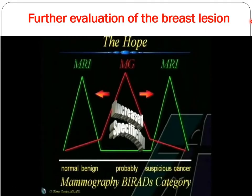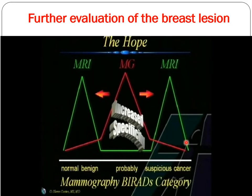Why do we perform breast MRI simultaneously with mammogram? As shown here, when mammogram identifies a suspicious lesion, MRI can further stratify the result — normal, benign, suspicious, or requiring biopsy. This demonstrates the importance of performing MRI for breast lesions already identified by another modality such as ultrasound or mammogram, to better characterize them.